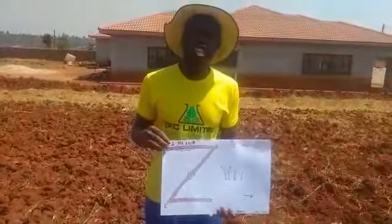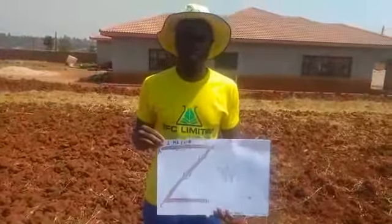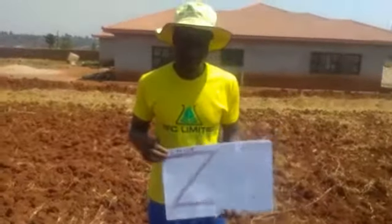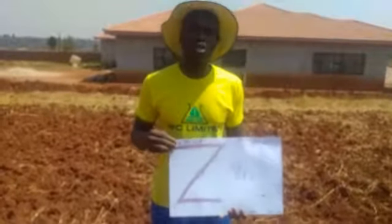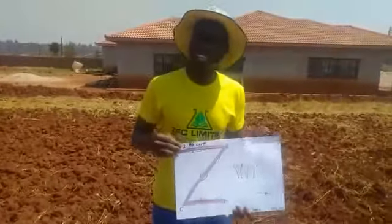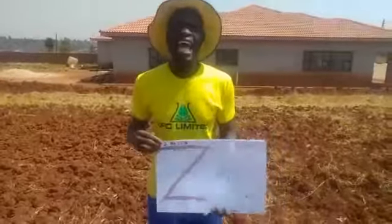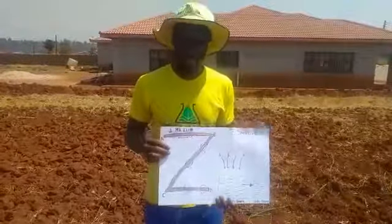In Zimbabwe, there are three sampling methods used to take soil samples. These include Z sampling, W sampling, and random sampling.